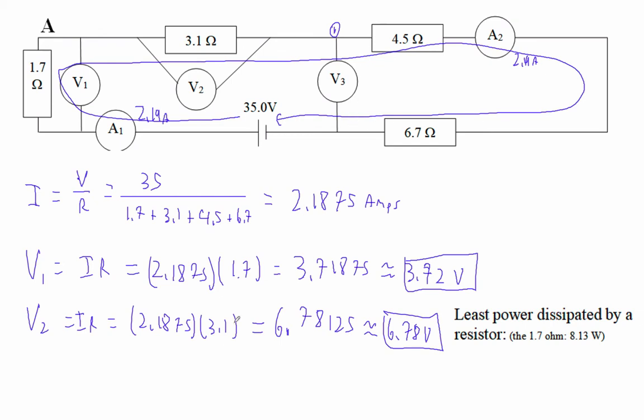So V3 is the same current, 2.1875, but the resistance is more complicated. So it's 4.5 plus the ammeter is 0, plus 6.7.